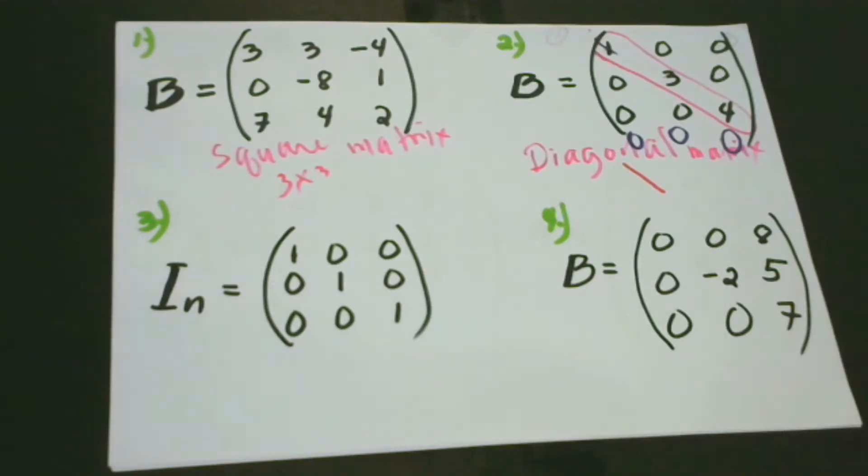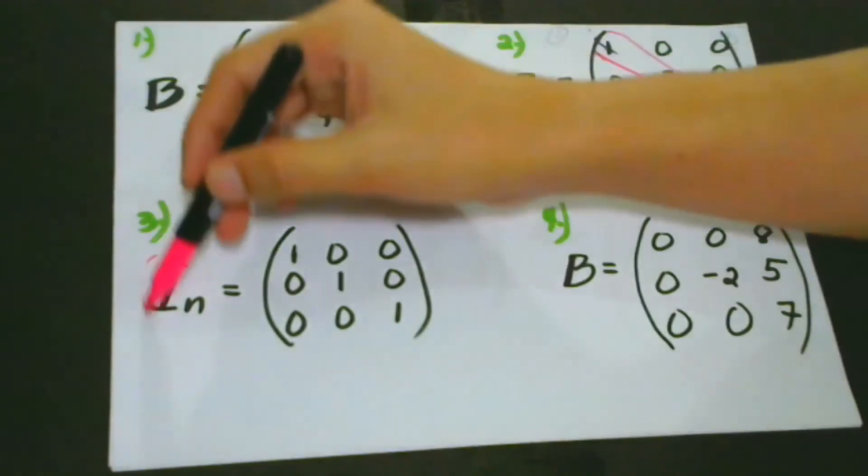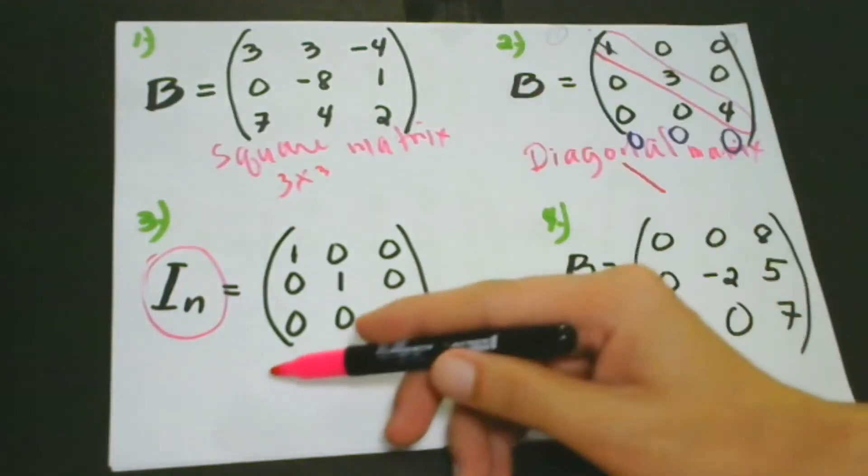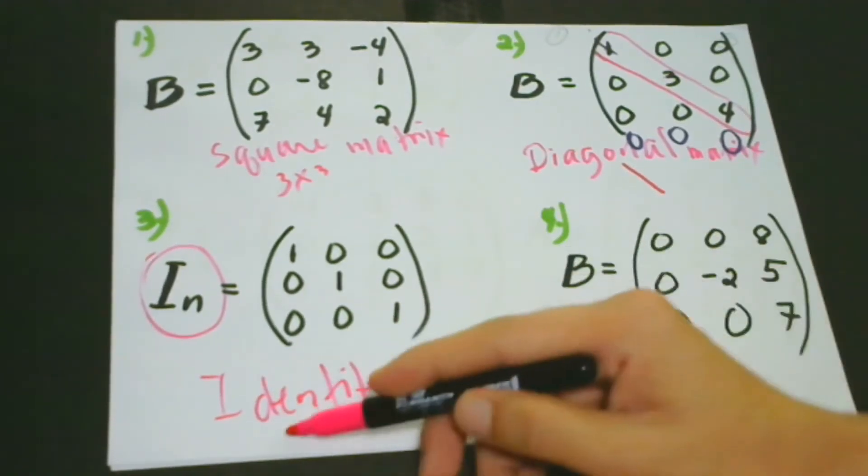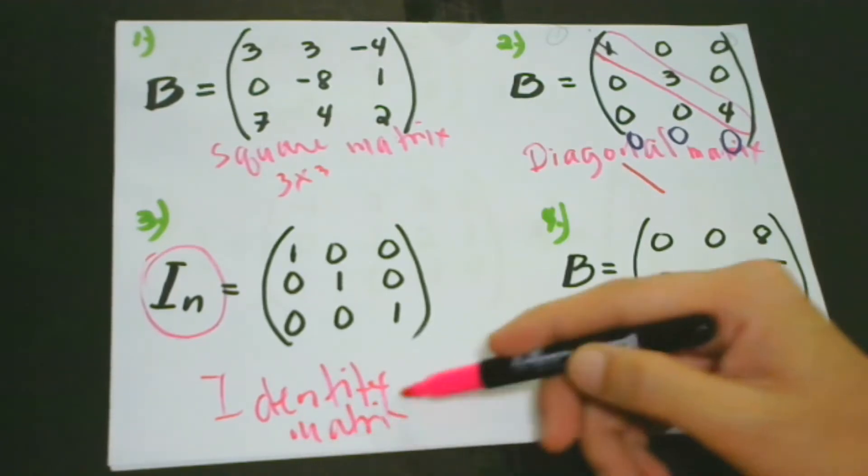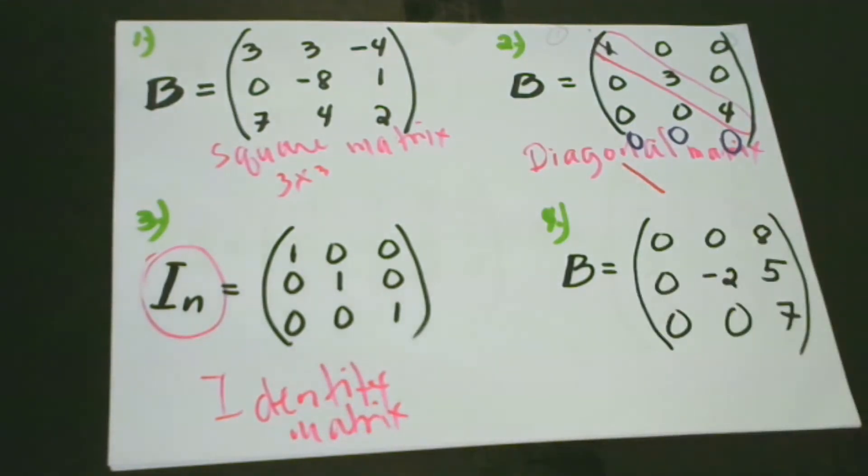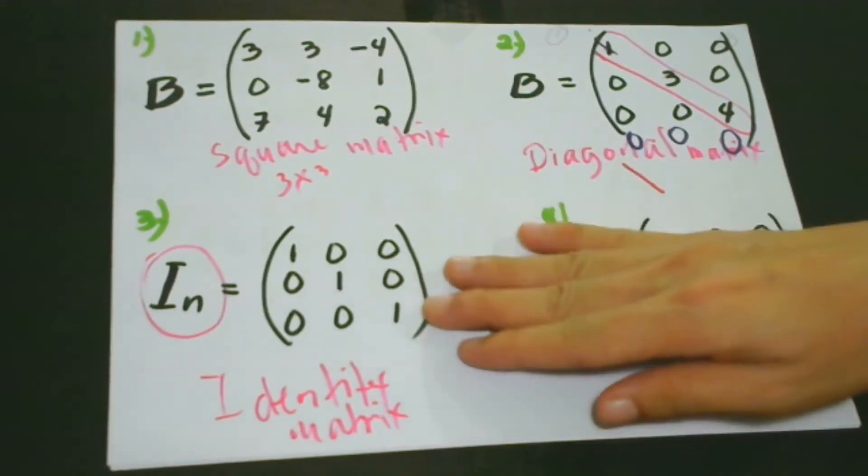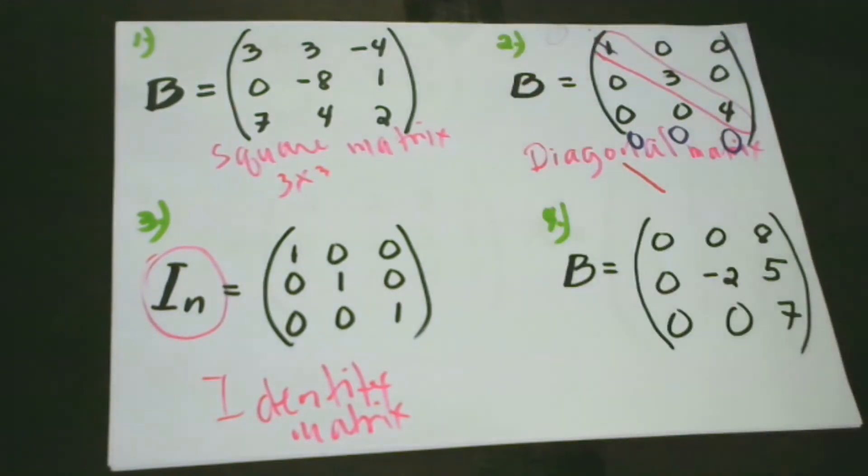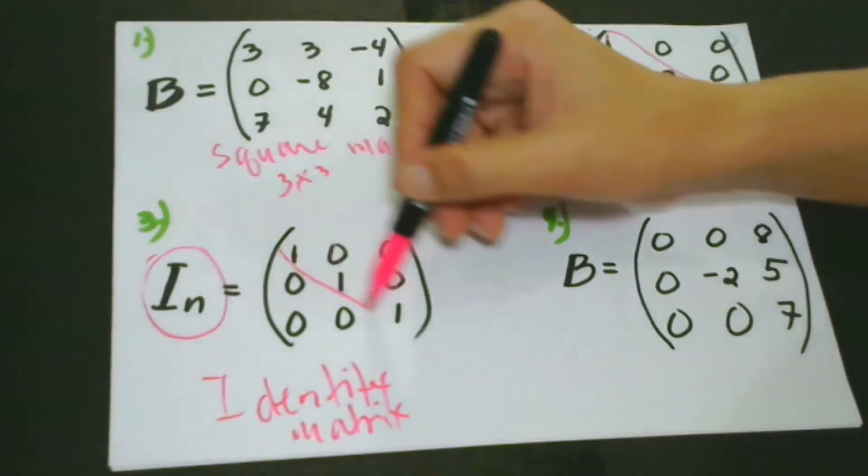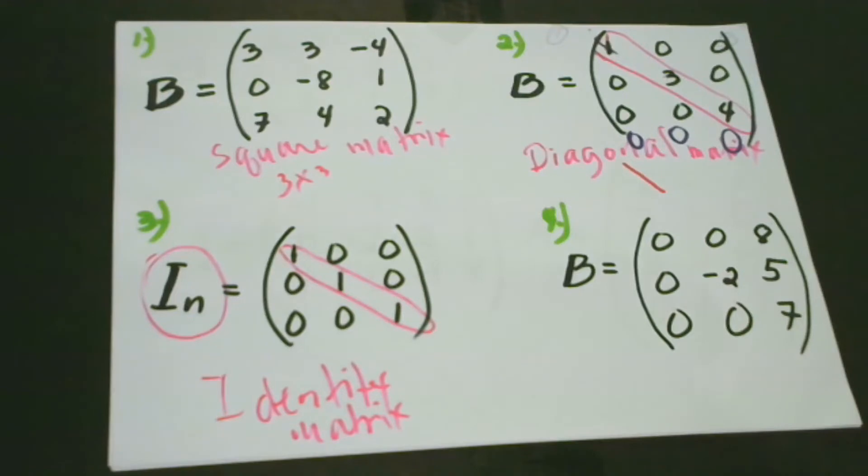Let's go to the third matrix. This matrix is called identity matrix, and this is denoted by I. What is an identity matrix? This is actually a diagonal matrix, but what makes it different is that its diagonal elements are equal to 1. In our diagonal matrix, it can be any number more than 0: 1, 2, 3, 4, 5, and so on. But in this case, the diagonal elements are always equal to 1.